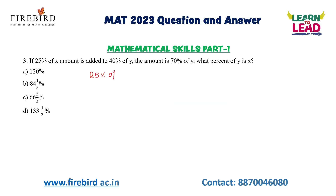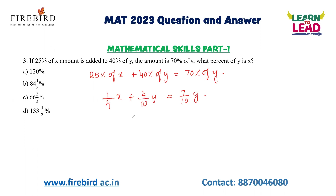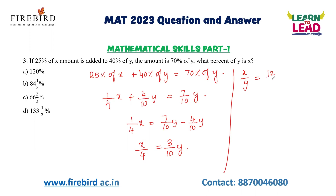Next question: 25% of X added to 40% of Y is equal to 70% of Y. What percentage of Y is X? Converting to fractions: 25% is 1/4, 40% is 4/10, and 70% is 7/10. So (1/4)X = (7/10)Y − (4/10)Y, giving X/4 = (3/10)Y. Therefore X/Y = 12/10 = 6/5. Multiplying by 100, X is 120% of Y.